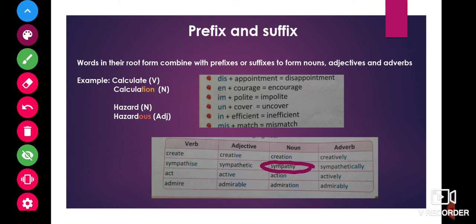In the same way, sympathy is the root form of the word. When we add the suffix i-s-e, it becomes a verb. When we add i-c, sympathetic becomes an adjective. When we add a-double-l-y, sympathetically becomes an adverb.